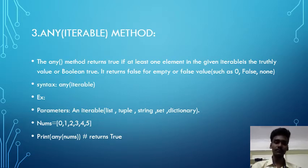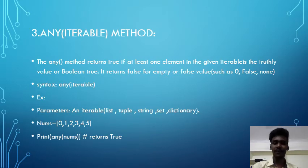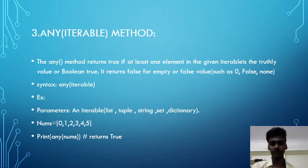The third one is any(iterable) method. The any() method returns True if at least one element in the given iterable is a truthful value or boolean True. It returns False for empty or false values such as zero, False, and None. Its syntax is any(iterable), and the example is given below.